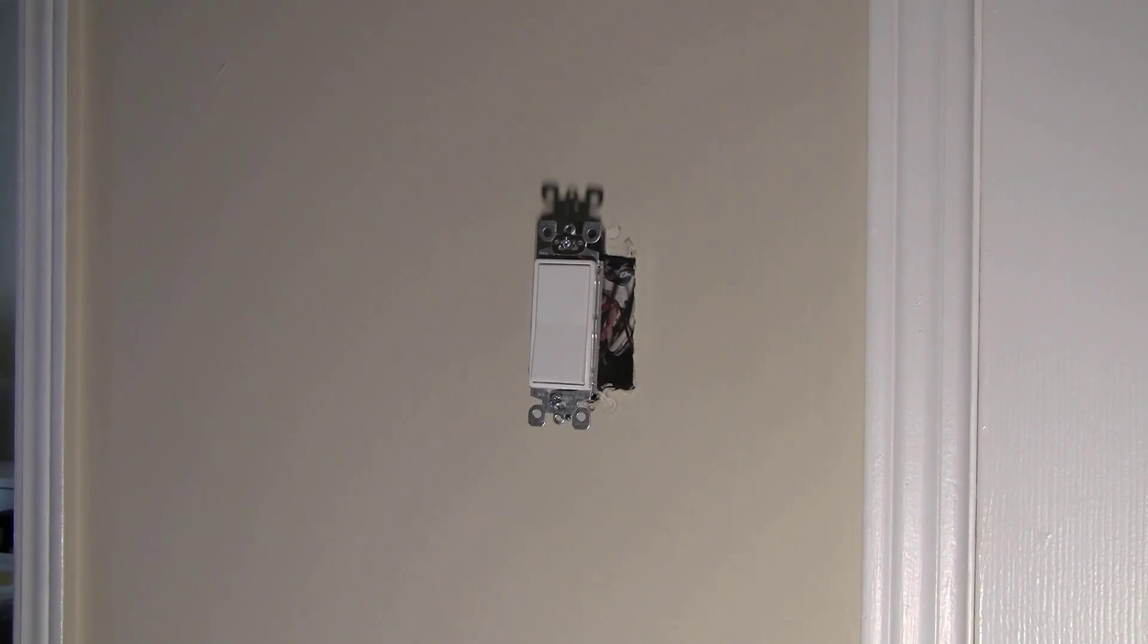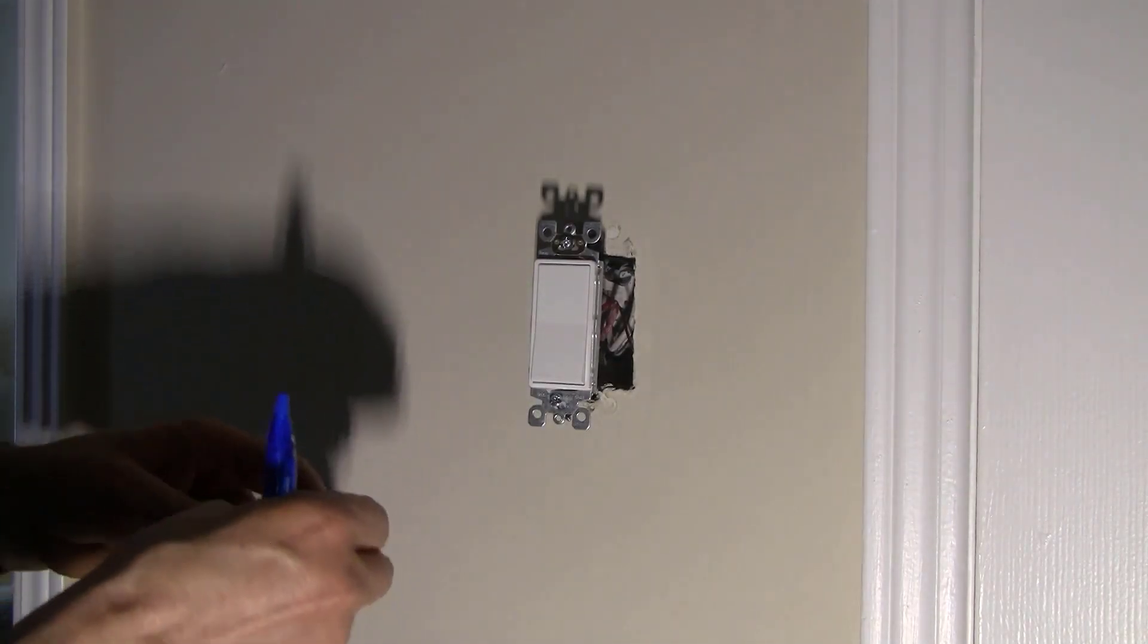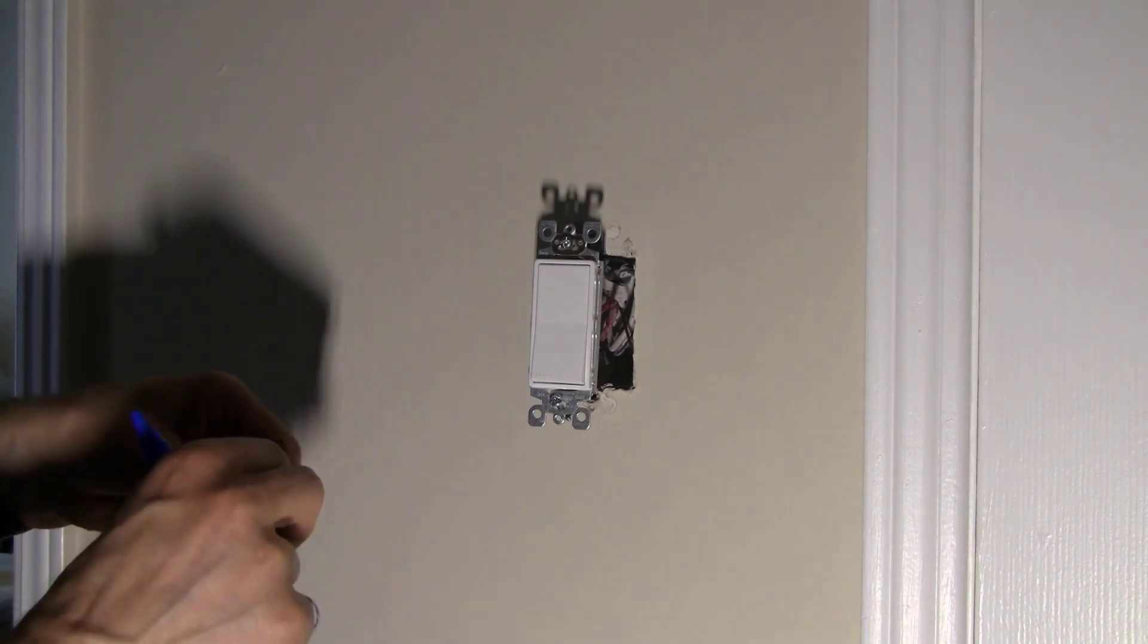The second mistake is not marking the wires in three- and four-way switches. Often there are wires of the same color, and if you don't mark them, you might get confused about where they went. Take some masking tape or painter's tape and mark each of the wires on a three- or four-way switch.